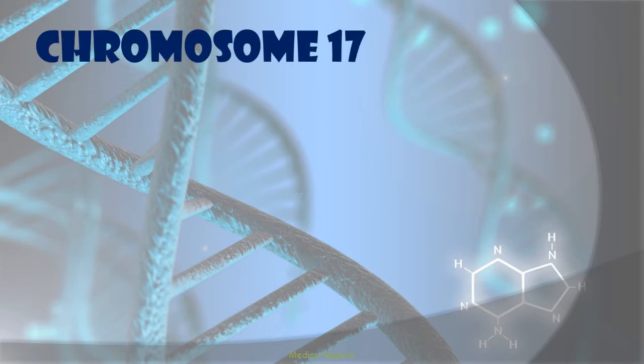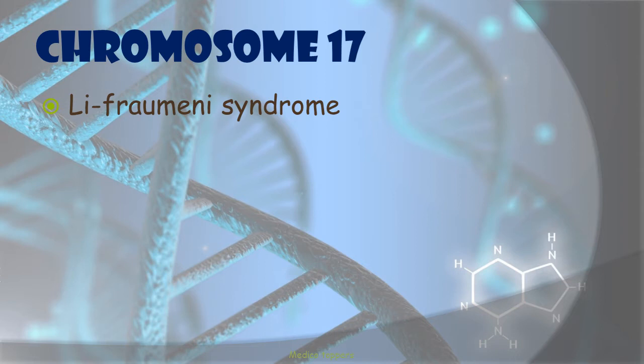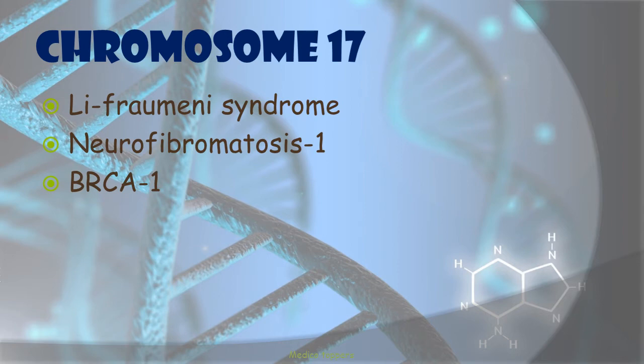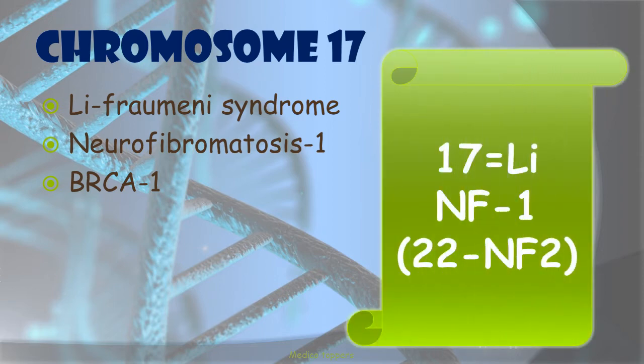Chromosome 17 is associated with Li-Fraumeni syndrome, Neurofibromatosis type 1 (NF1), and BRCA1, which is associated with genetic predisposition towards breast carcinoma. The mnemonic is that 17 looks like an inverted 'Li.' Also note that NF1 is on chromosome 17, while Neurofibromatosis type 2 (NF2) is on chromosome 22.